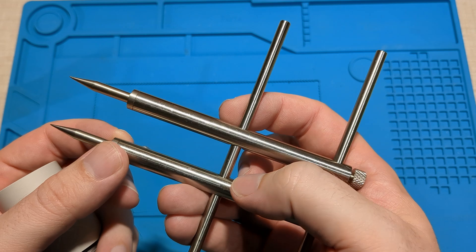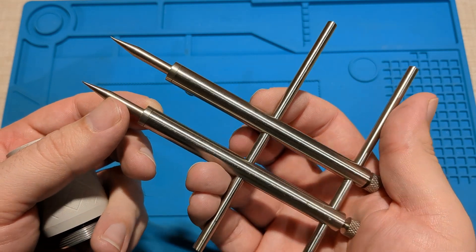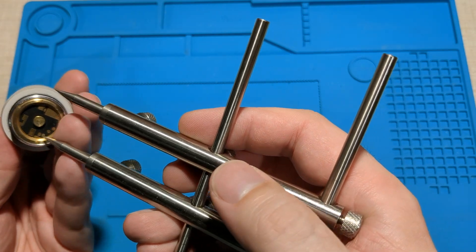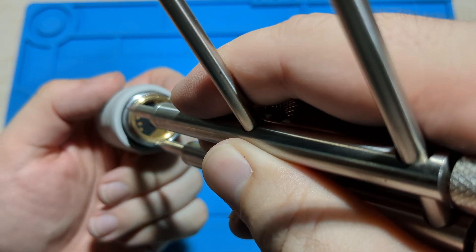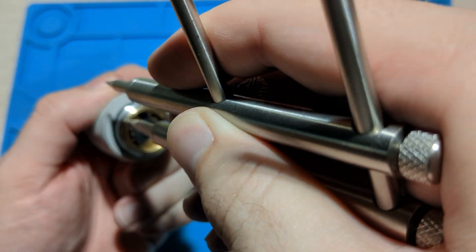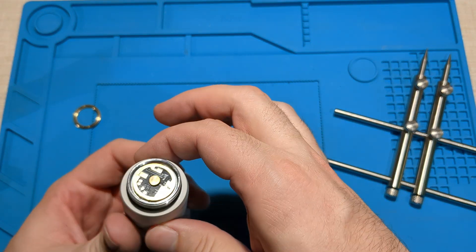These are camera spanner wrench tools from Aliexpress, you can probably get them on Amazon too. That was a bit tricky. Okay, we got that out.